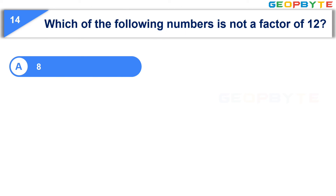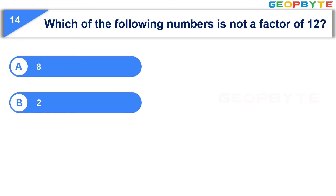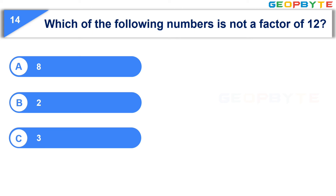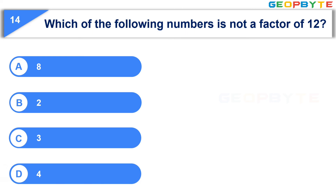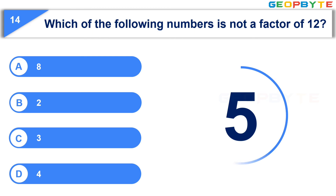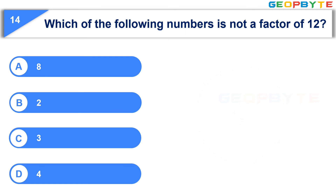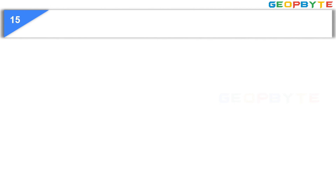The 14th question is: Which of the following numbers is not a factor of 12? Option A: 8, Option B: 2, Option C: 3, Option D: 4. Your time starts now. Your time is up and the correct answer is Option A, 8.